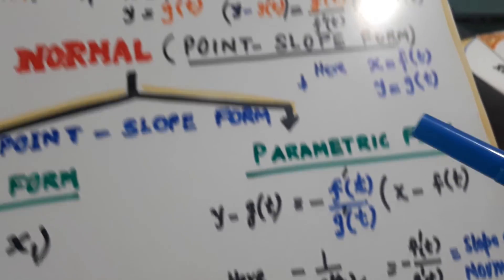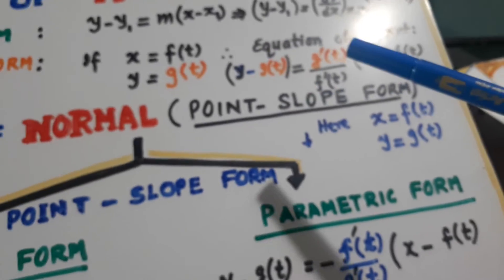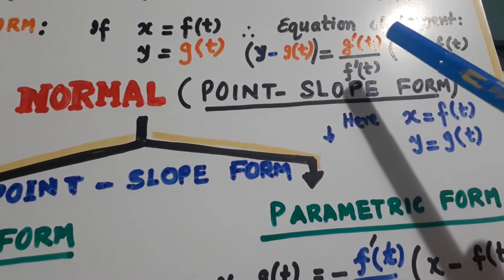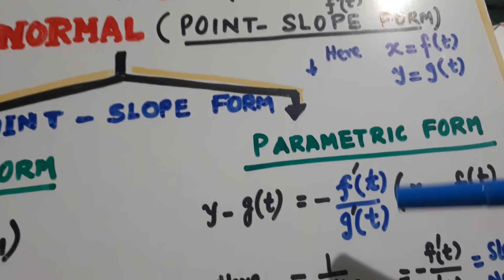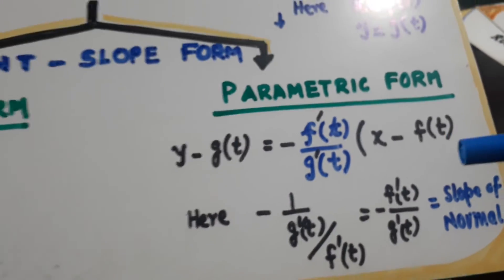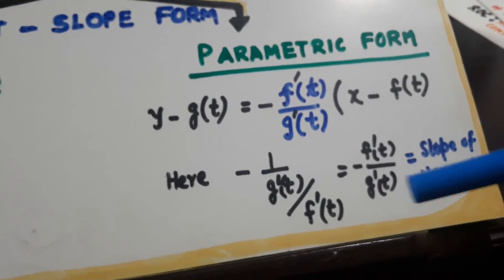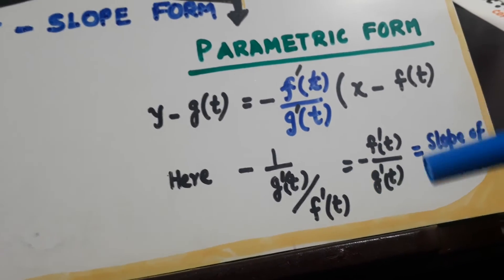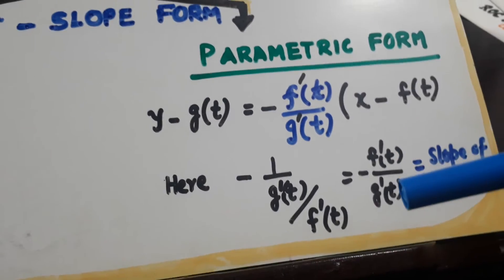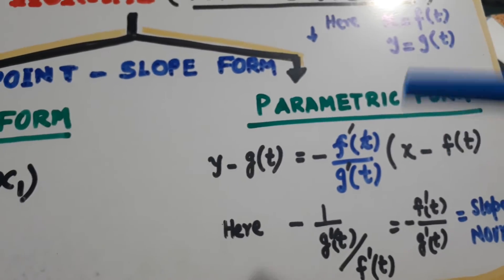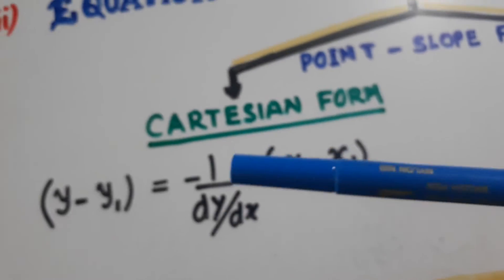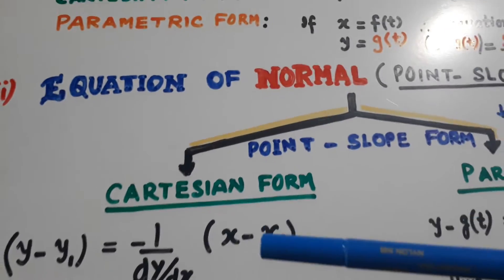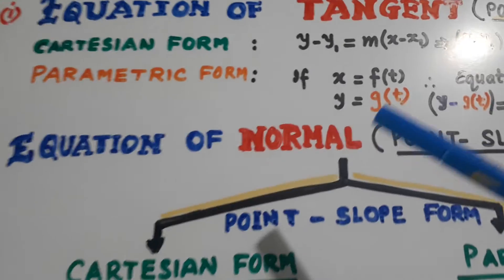And in parametric form, here the slope will become inverted. See, f'(t) below, g'(t) above will become inverted. So it will be minus of this, (x minus f(t)). So slope here is minus 1 over g'(t) over f'(t) or minus f'(t) over g'(t). So this is the parametric form. This is the Cartesian form. We shall be using the Cartesian form in most of the cases. So we have to remember that.